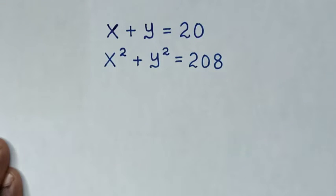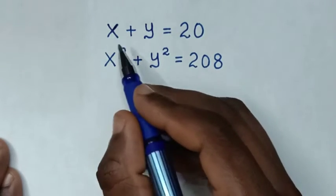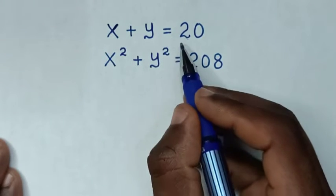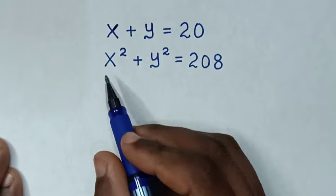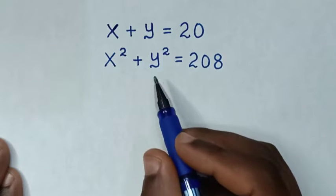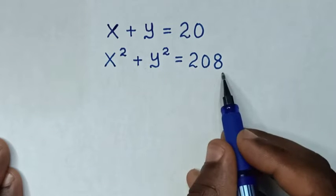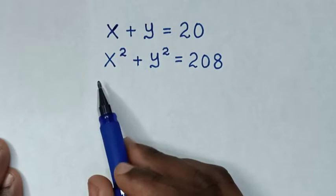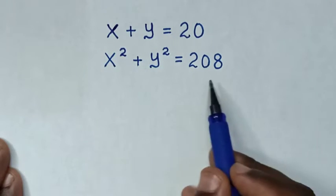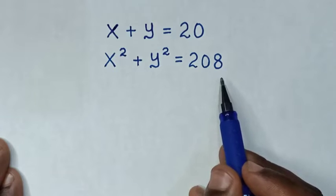Hello. How to solve x plus y is equal to 20, and x squared plus y squared is equal to 208 — to find the value of x and y from these equations.